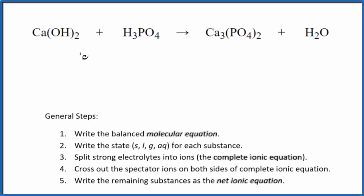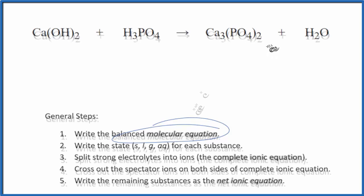In this video, we'll write the balanced net ionic equation for Ca(OH)₂ plus H₃PO₄, calcium hydroxide and phosphoric acid. So we need to balance the molecular equation first. This is the molecular equation here.